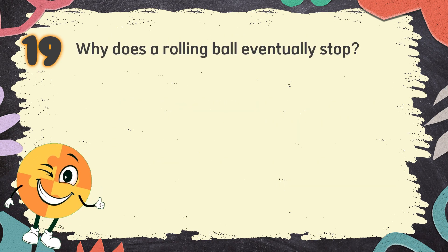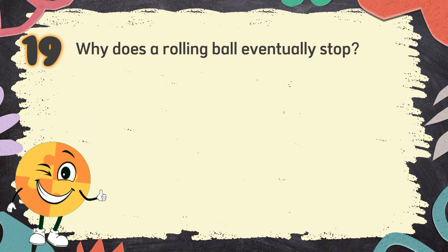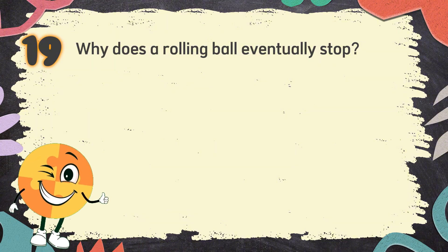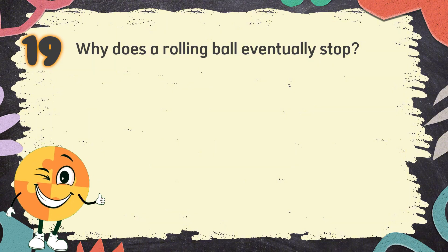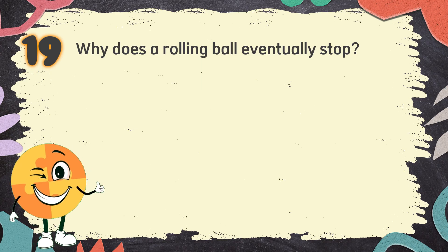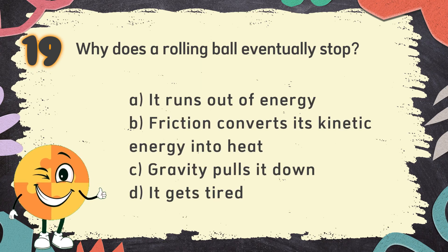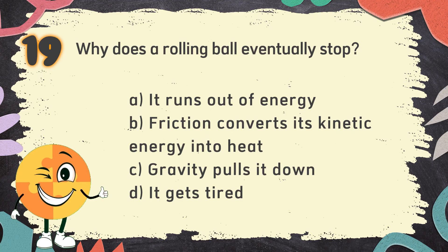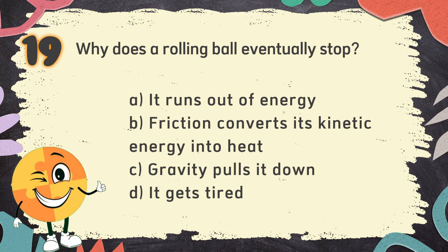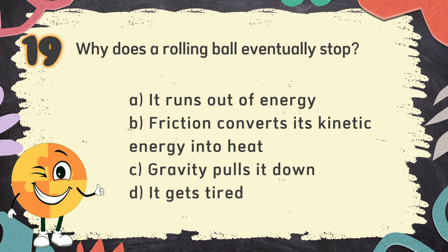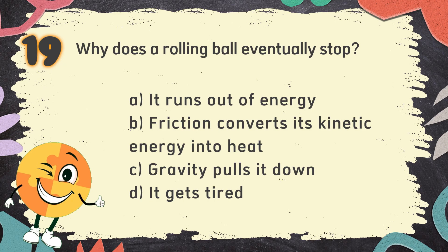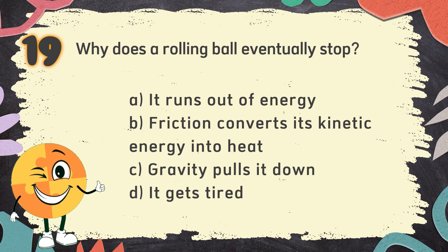Number 19. Why does a rolling ball eventually stop? The choices are: A. It runs out of energy, B. Friction converts its kinetic energy into heat, C. Gravity pulls it down, D. It gets tired.